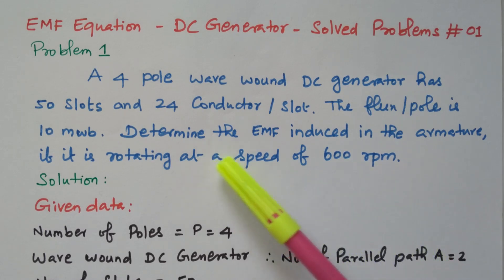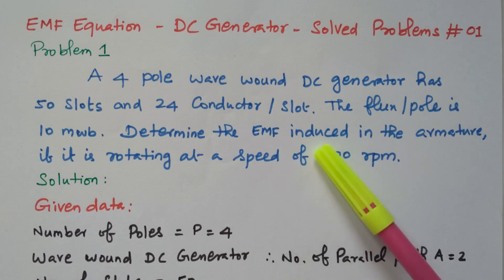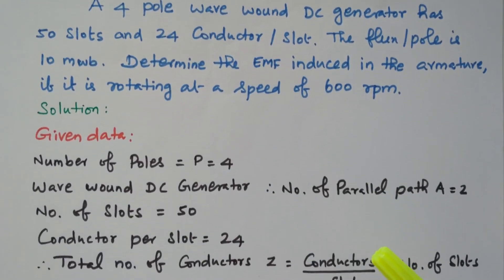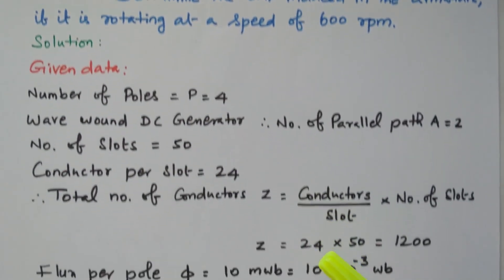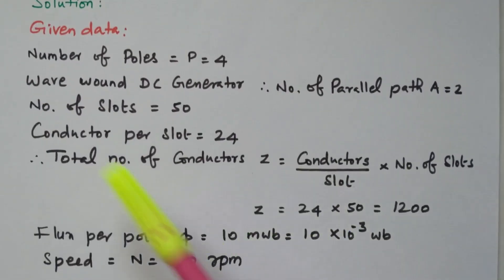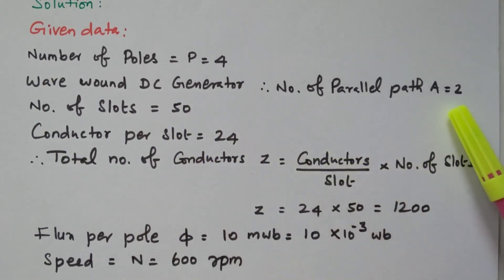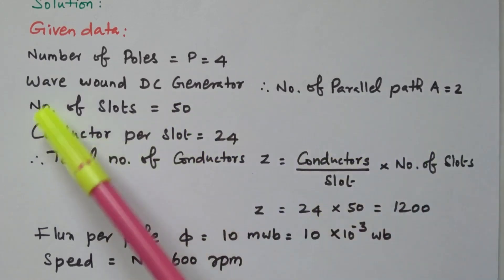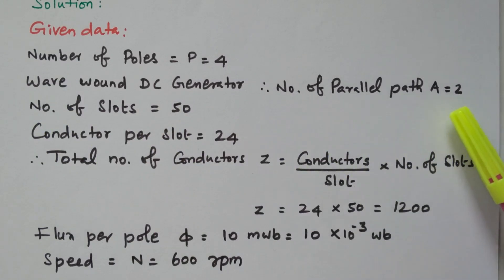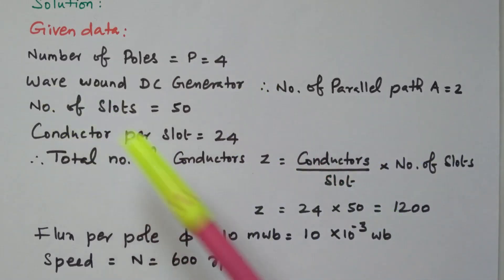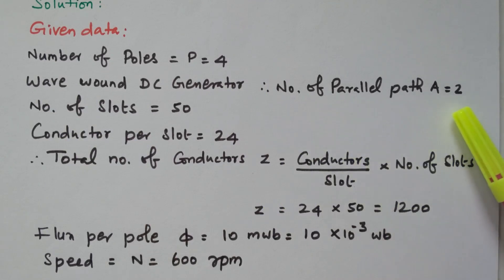Based on the given data, we need to find the EMF induced in the armature. The number of poles is given as 4. It is given as a wave wound DC generator, so the number of parallel paths is always equal to 2. For wave winding, the number of parallel paths equals 2. In case of lap winding, the number of parallel paths equals the number of poles. But here it is wave winding, so the number of parallel paths is always 2.